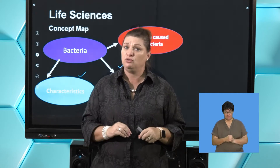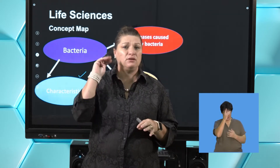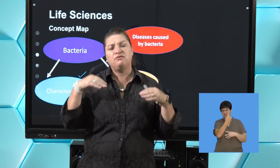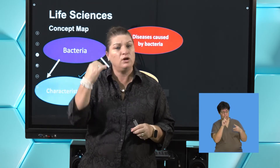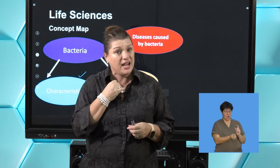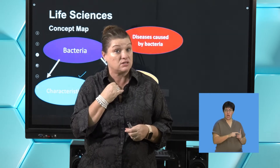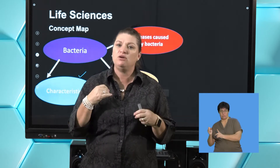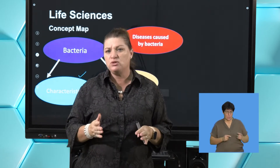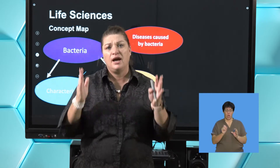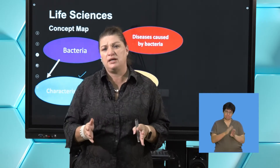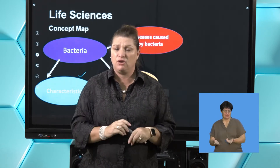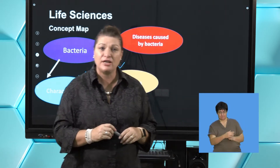We're going to go through four bacterial diseases briefly, covering just the basic points. For each one, we're going to look at two things: what does that disease do to us, and how are we going to manage the spread? We've also got one that actually attacks plants — bacteria can attack plants just as viruses can. It's very important to know how to stop the spread, as we did with COVID. What can we do, and what can our government do for us? Let's have a look at the first disease.